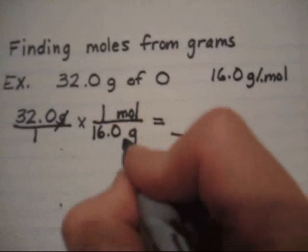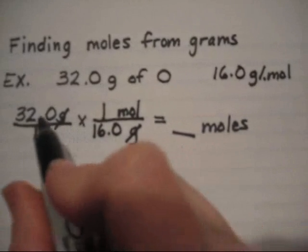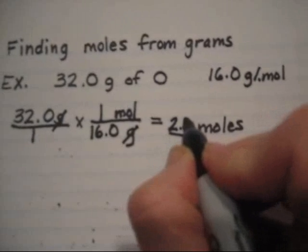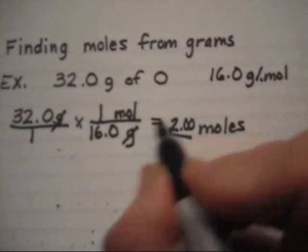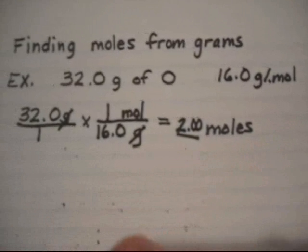The grams drop out then you just divide 32 by 16 which just comes out to 2.00 moles. We're going to keep three significant figures because that's what we have in all of these other numbers.